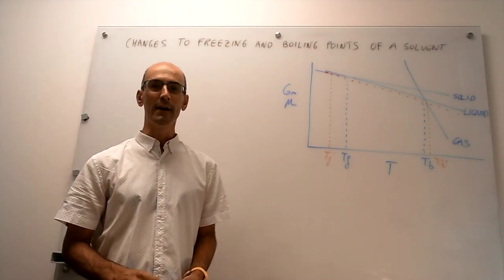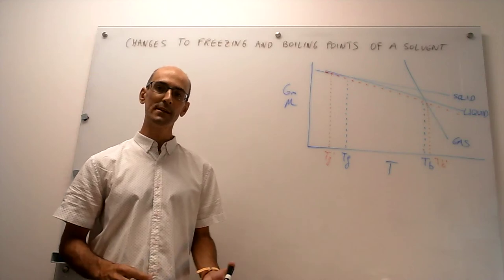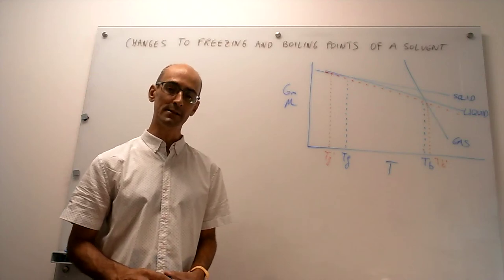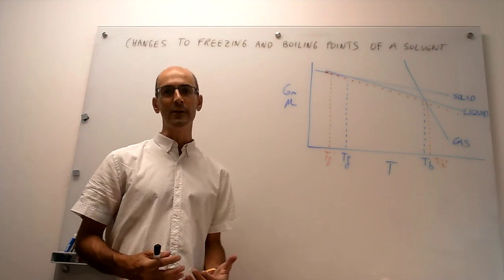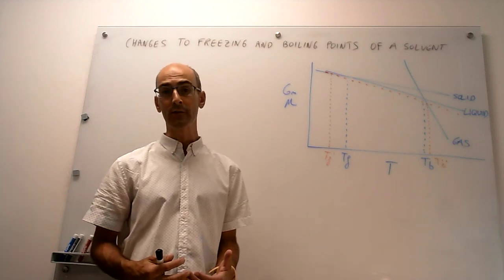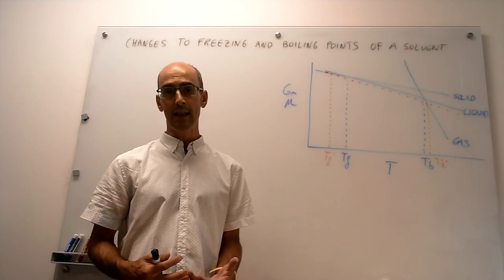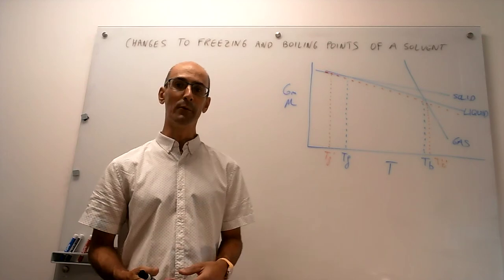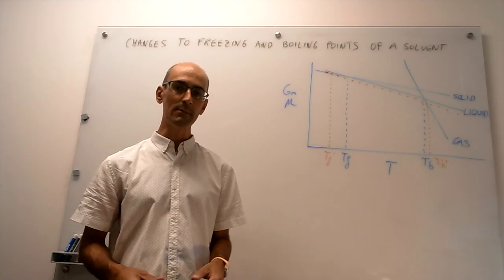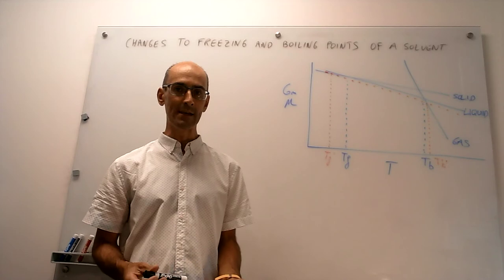In this video we quantify the changes to the freezing and boiling point of a solvent when you add some solute to it. In a prior video we examined how the use of chemical potentials allows us to determine the changes to the freezing and boiling point of a solvent in a mixture from a qualitative point.